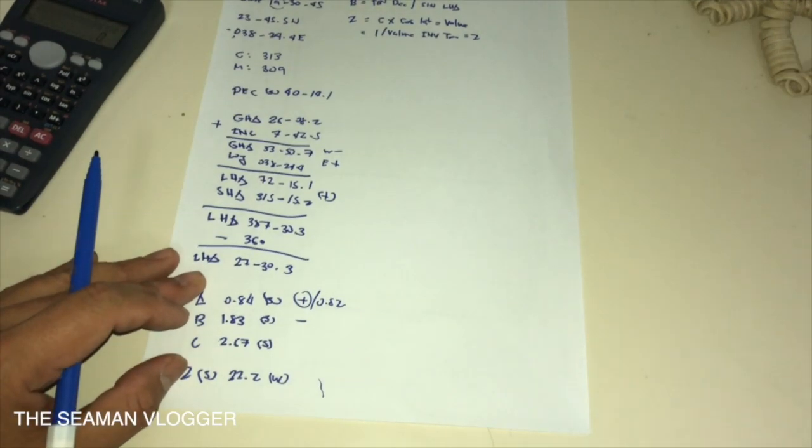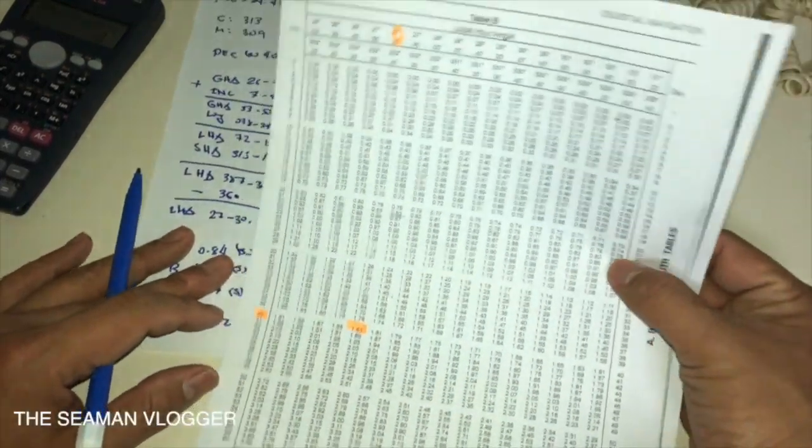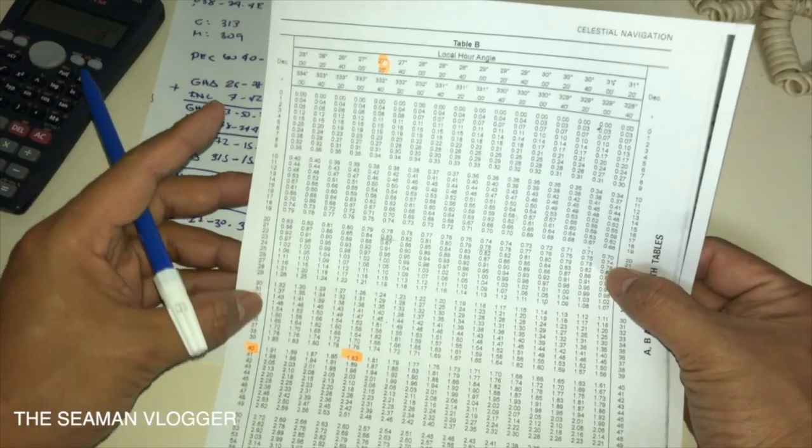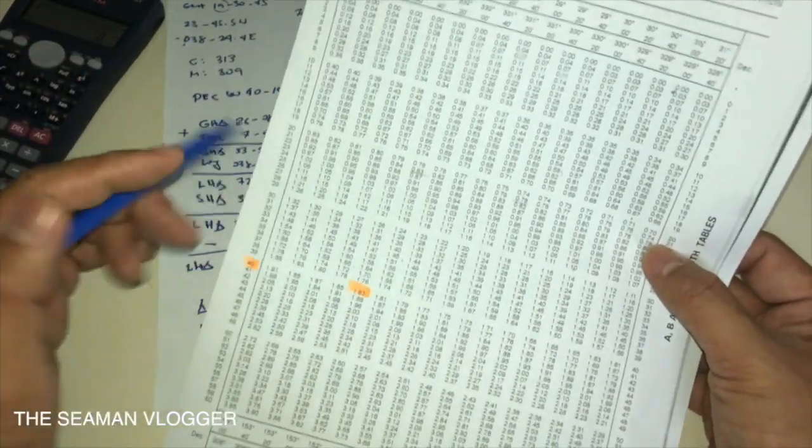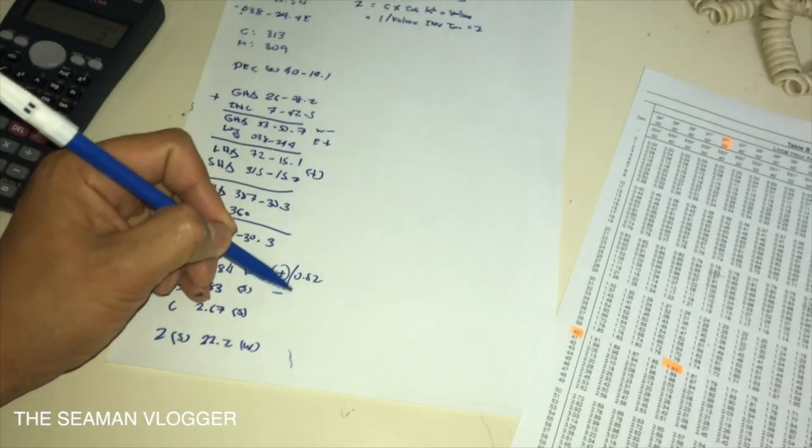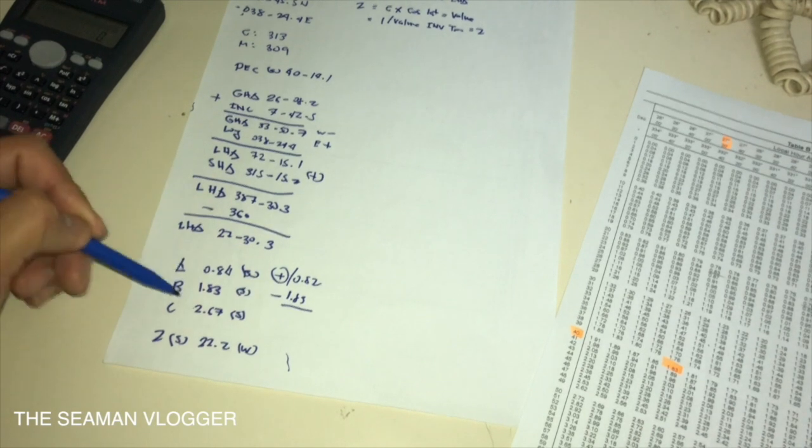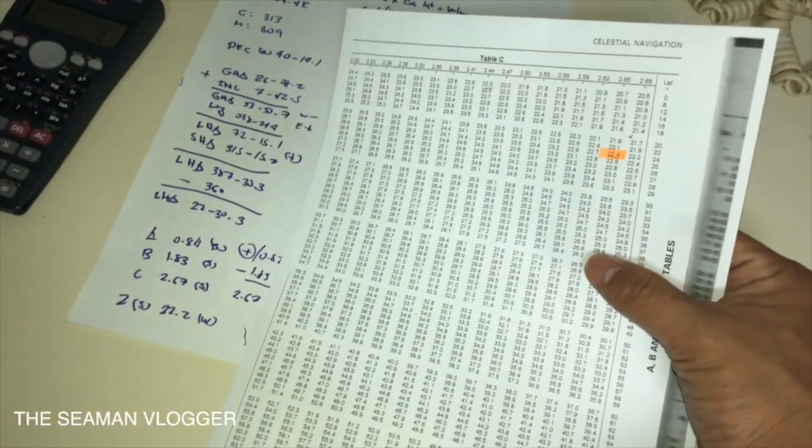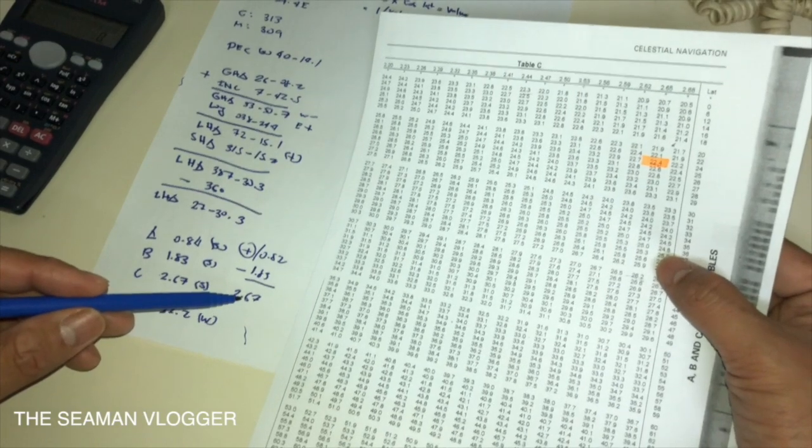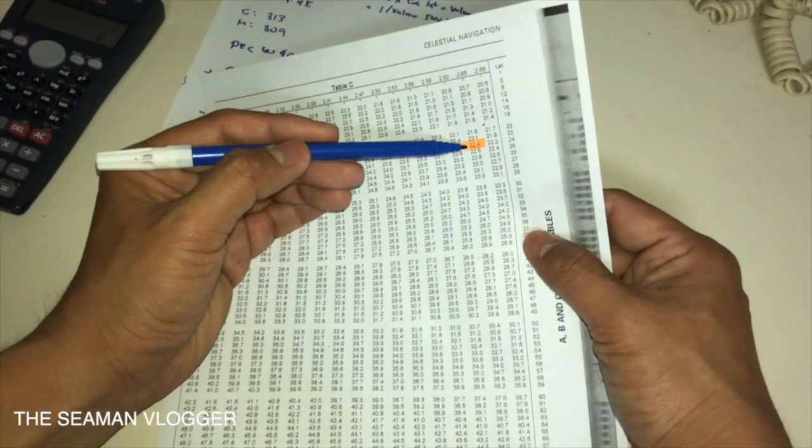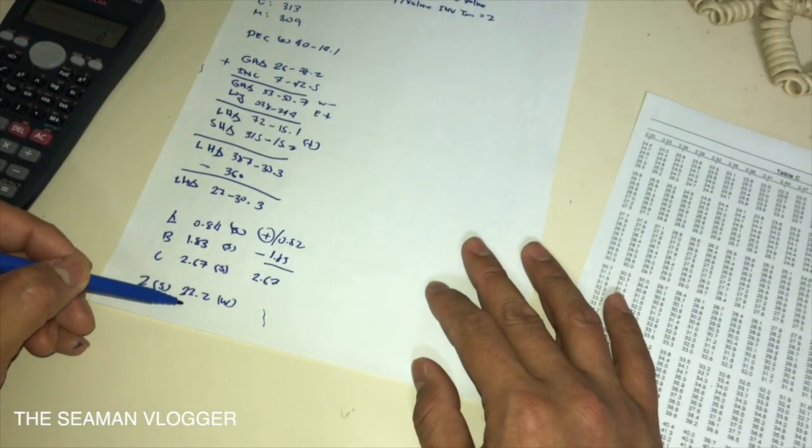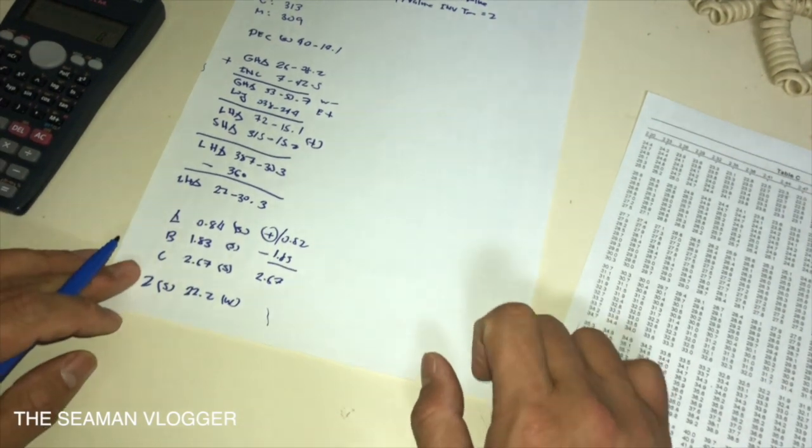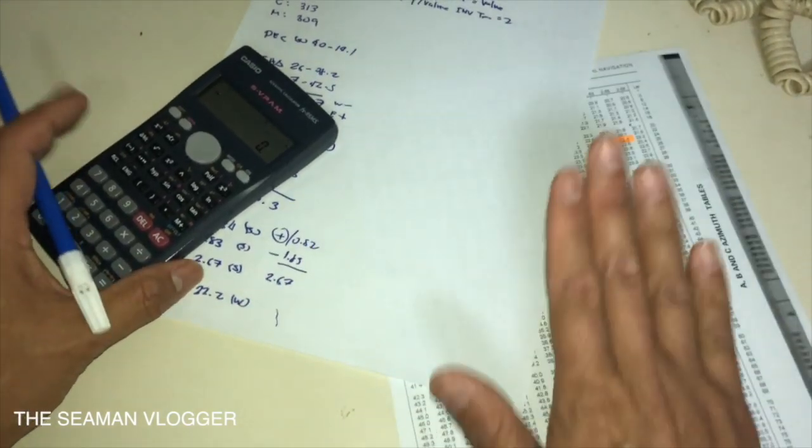Next B. In here, we have again the declination and LHA. So 27.20, declination is 40. I already highlighted it, it's 1.83. They are same. So still the same ruling, 2.67. This is the table C. We are going to get the value of the Z. It's 2.67, so I'm going to use the 2.65. So here is 22.4, I have 22.2. So still the same, it's not too far. The important is you are near. So I have no problem with the calculator and the Norris Nautical Table. All are same.